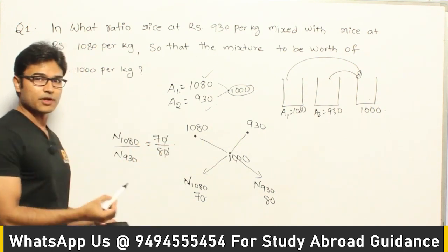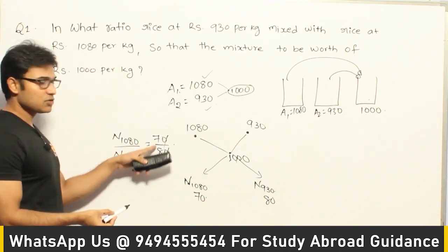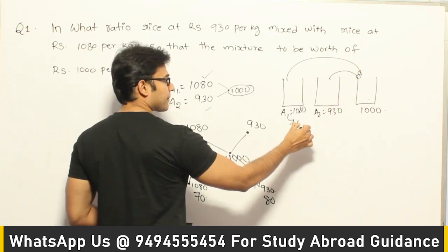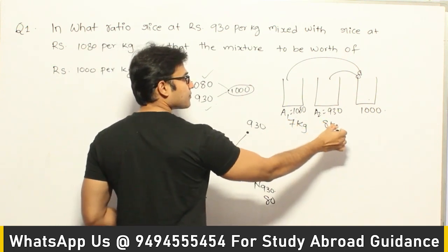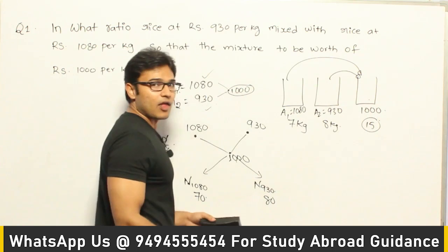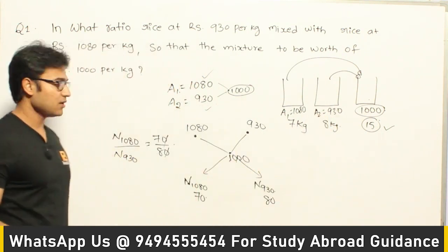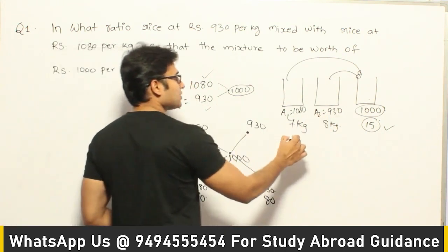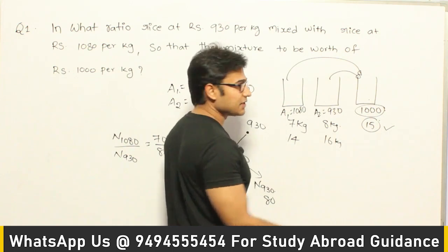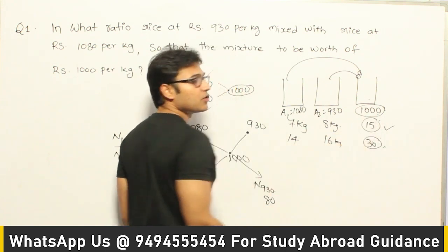That is the meaning of it. You can take this rice in any values as long as the ratio is 70 to 80. For example, you can take 7 kg from here and 8 kg from here to get a 15 kg mixture, or take 14 kg and 16 kg to get 30 kg — and in either case you can sell each kg at 1000 rupees without any loss.